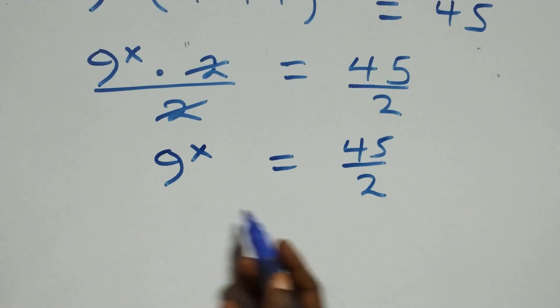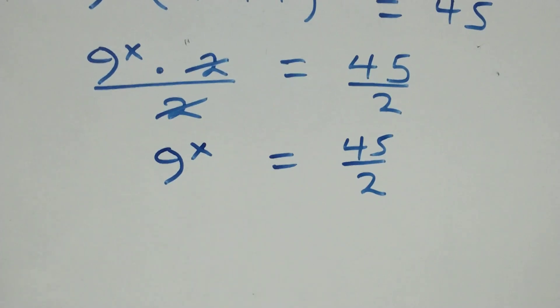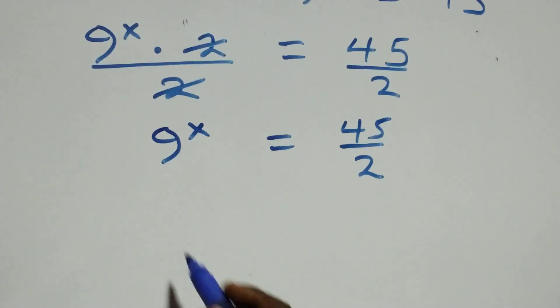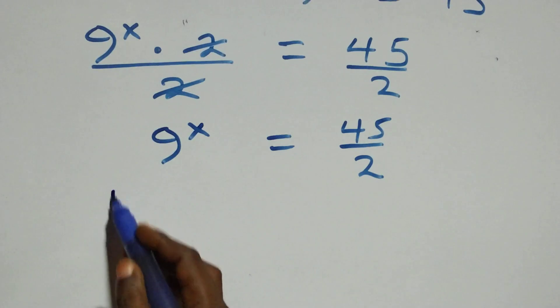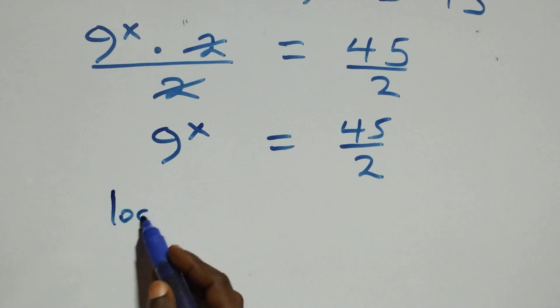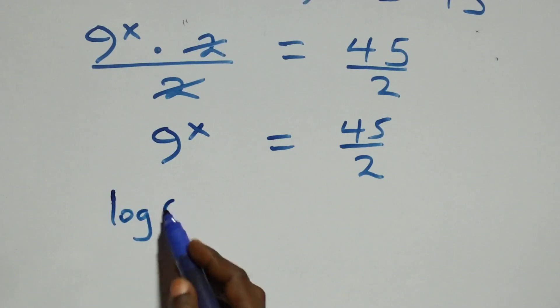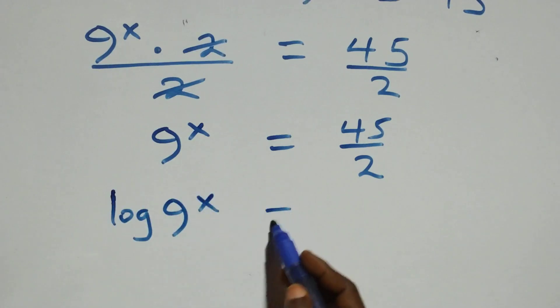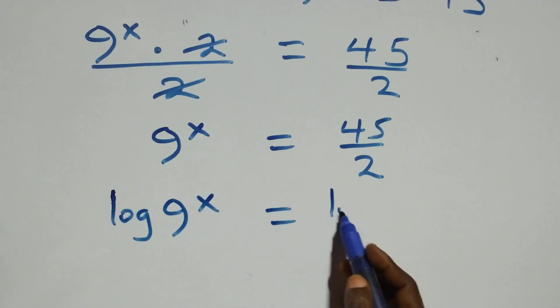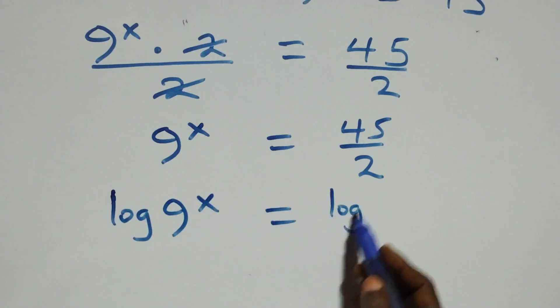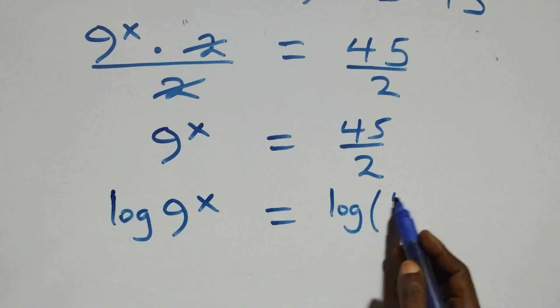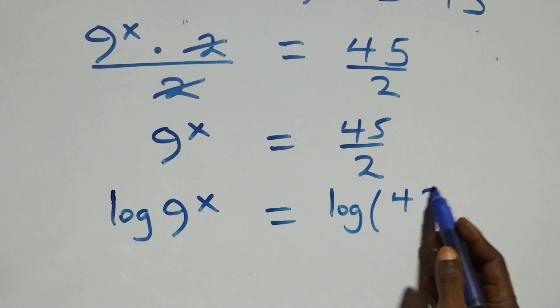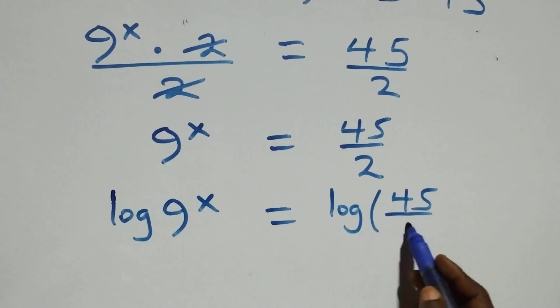Next step here, we take the log on both sides. We have log 9 raised to power x equals to log 45 over 2.